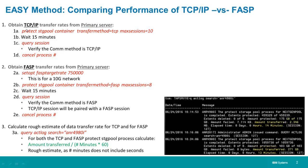First, obtain TCP IP transfer rates from your source Spectrum Protect server. From the admin command line, issue Protect Storage Pool, the container name, transfer method equals TCP, which is the default, and max sessions equals 10, which is the default. Wait about 15 minutes for the process to kick off and start transferring data, then issue a query session to verify that you have the comm method of TCP IP. Finally, cancel that Protect Storage Pool process.